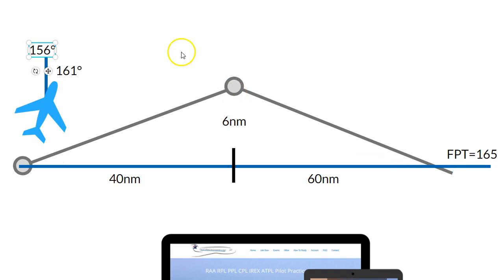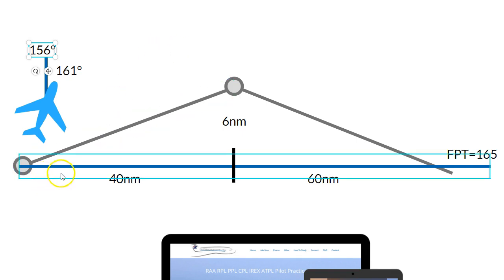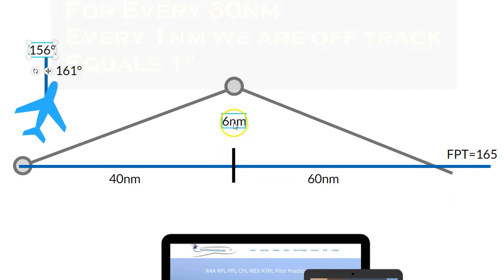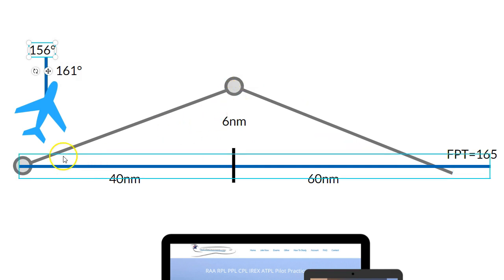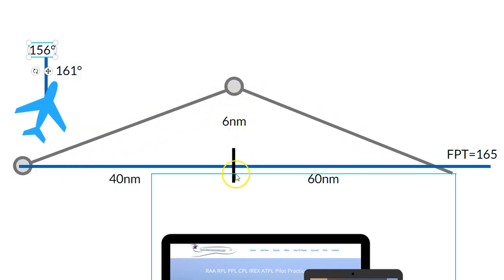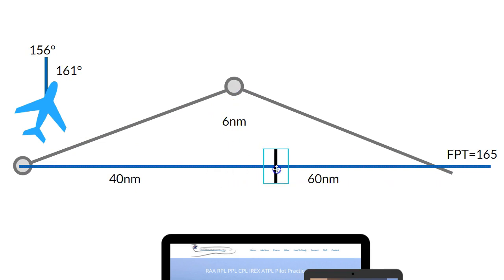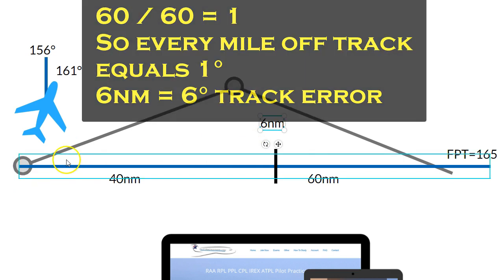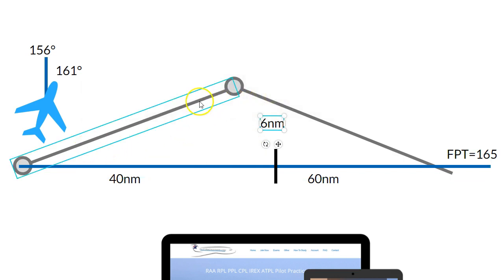Now we need to use the 1 in 60 rule. Every 60 nautical miles we travel along our flight plan track, for every one nautical mile that we are off track, that is one degree of track error. So if we got to the 60 nautical mile mark and we were six nautical miles off track, then we'd be six degrees off track — our track error is six degrees.